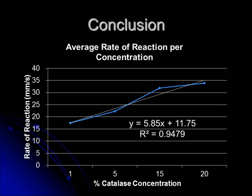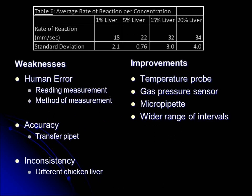The purpose of this lab was to determine the relationship between enzyme concentration and the rate of reaction. As seen in the videos for the different enzyme concentrations, the amount of bubbles formed in 5 seconds increased as enzyme concentration increased. This supports the hypothesis, which suggested that the relationship between enzyme concentration and the rate of reaction is directly proportional. The graph displaying the average rate of reaction shows this relationship. Table 6 shows a high standard deviation, which increased with exception to the 5% liver concentration solution.